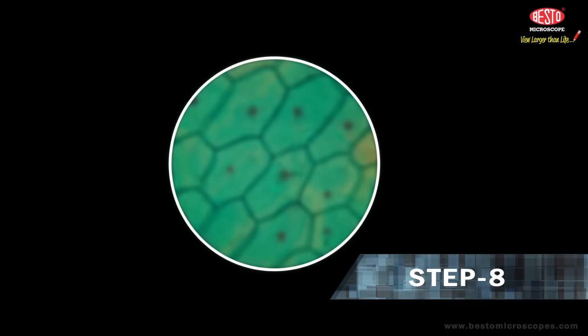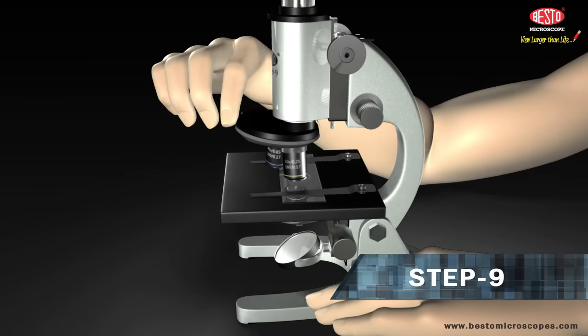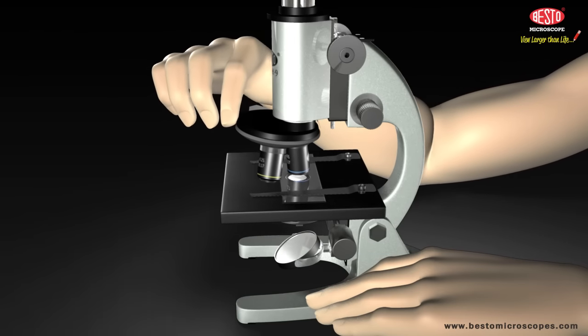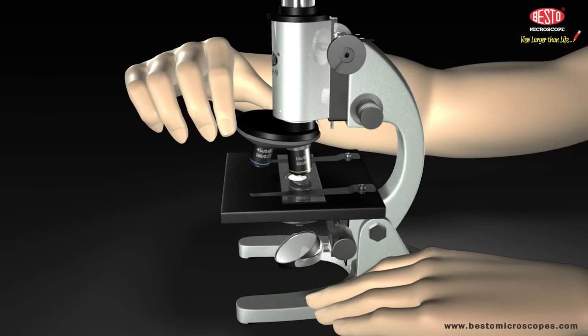Step 8: When the specimen slide comes into focus, it will become sharp and clear. Step 9: To use the high power objective, turn the revolving nosepiece to bring it into position over your sample or slide.